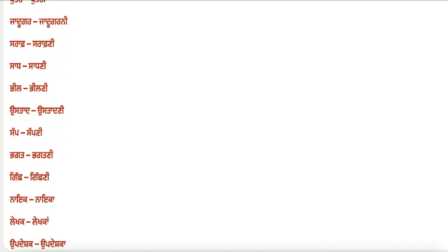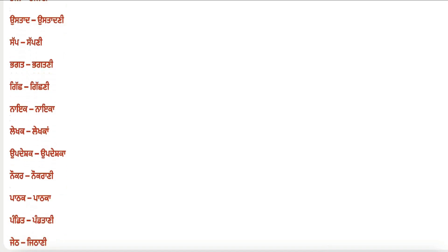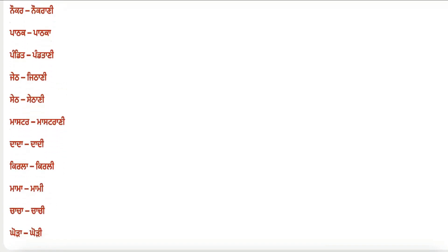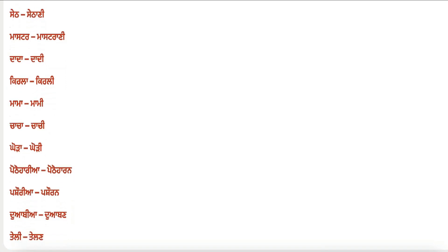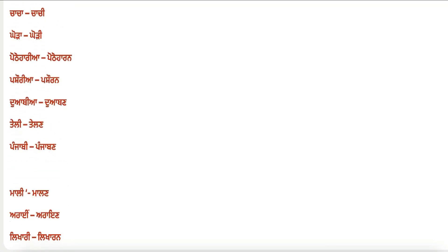Continuing the word pairs: prabandak–prabandaka, gujjar–gujjari, bandar–bandari, mach–machhi, badal–badali, thekedaar–thekedaarni, sher–sherni, sewadaar–sewadaarni, putar–putri, jadugar–jadugrani, saraf–sarafni, pil–pilni, ustad–ustaadni, saap–saapni.